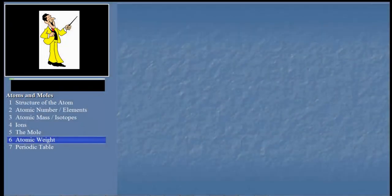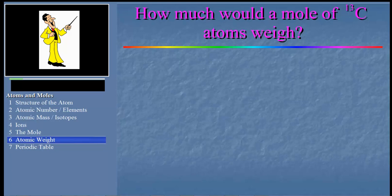Let's say we have a diamond containing one mole of carbon-13 atoms. Here's a question. How much would a mole of carbon-13 atoms weigh? Well, our diamond would weigh 13 grams. That's easy enough.